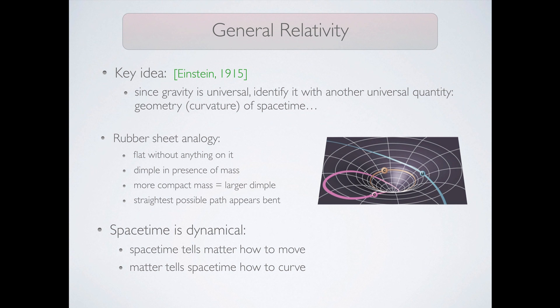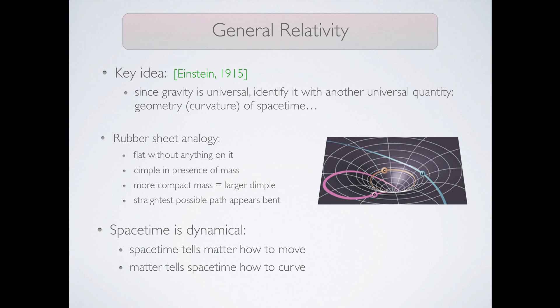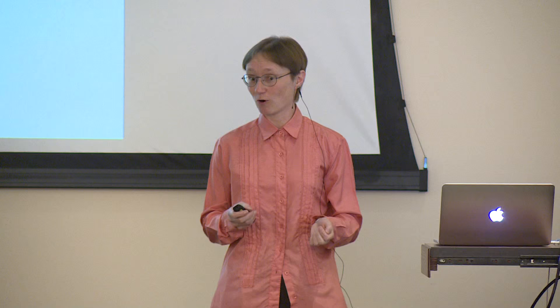You can think of this in a two-dimensional analogy of a rubber sheet. If there is nothing on the sheet, it is flat but if you put some heavy object, it makes a dimple and the more compact the object, the larger the dimple. Now, if you roll a small marble on the sheet, it's not going to look like it's going in a straight line anymore. It's still trying to follow the straightest possible path but the sheet itself is curved and so it gives rise to this bending. The same thing happens to spacetime except that in the case of spacetime, it's both space and time that get warped. So to summarize, spacetime tells matter how to move and matter in turn tells spacetime how to curve.